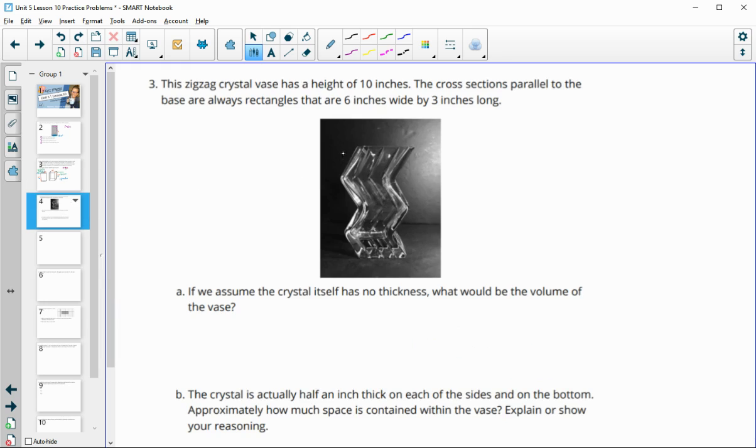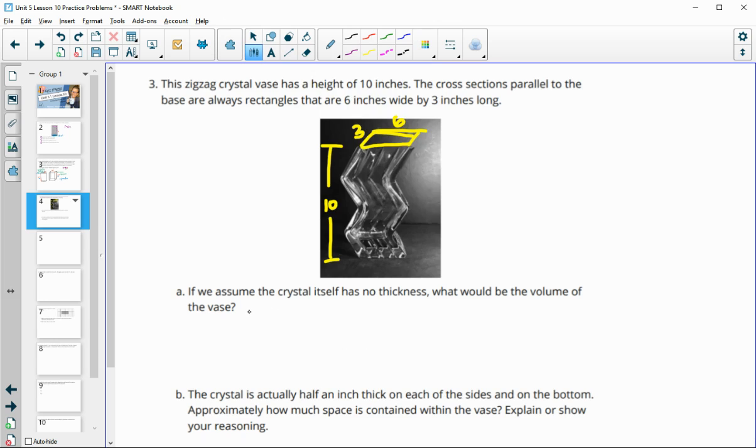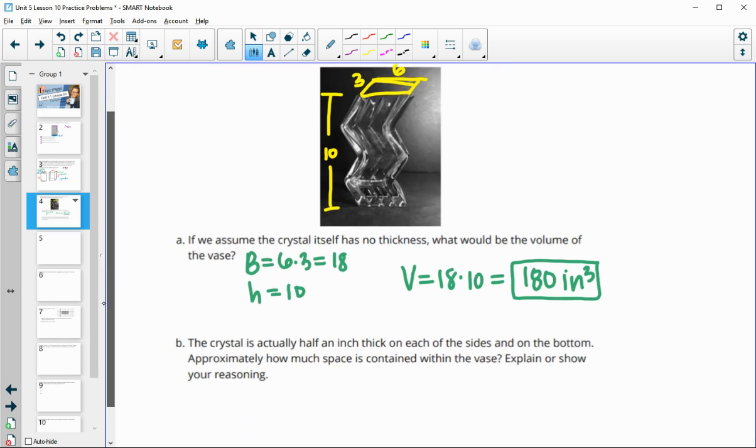Number 3, this zigzag crystal base has a height of 10 inches, and the cross sections parallel to the base are rectangles that are 6 by 3. If we assume that the crystal has no thickness, what would the volume of this vase be? We would be doing area of the base, which is 6 times 3 or 18, and multiply that by the height. So the volume would be 18 times 10 or 180 inches cubed. That would be if that crystal was just super thin and didn't have any width.